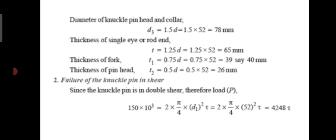Failure of the single eye or rod end in shearing. The rod end may fail in shearing due to the load. The formula is P equal to (d2 − d1) × t × tau. Substituting P equal to 150 × 10³, d2 equal to 104, d1 equal to 52, and t equal to 65, we get tau equal to 44.4 N per mm², that means 44.4 MPa.